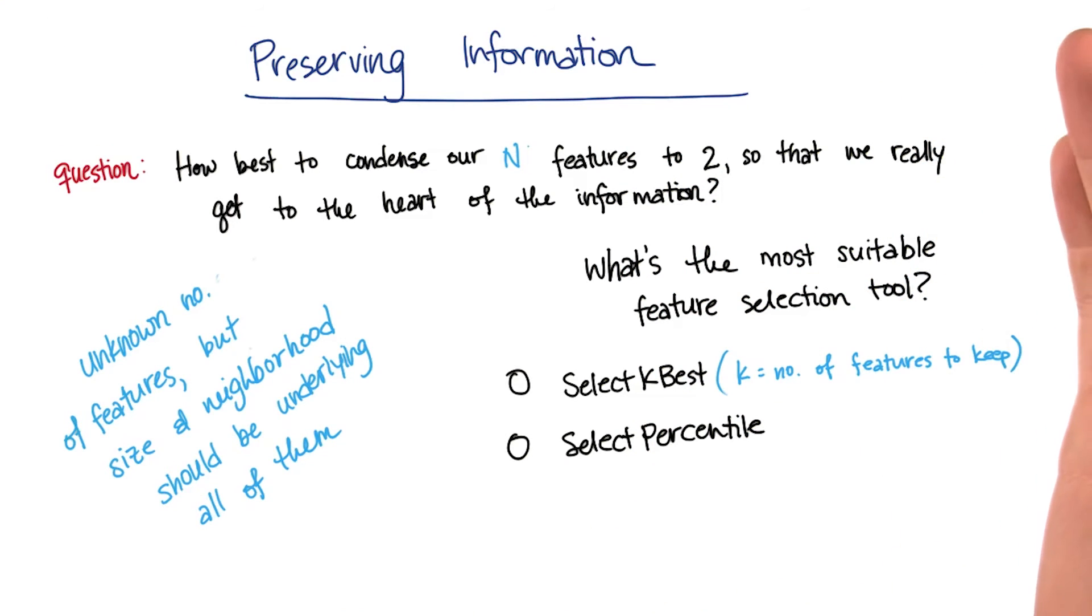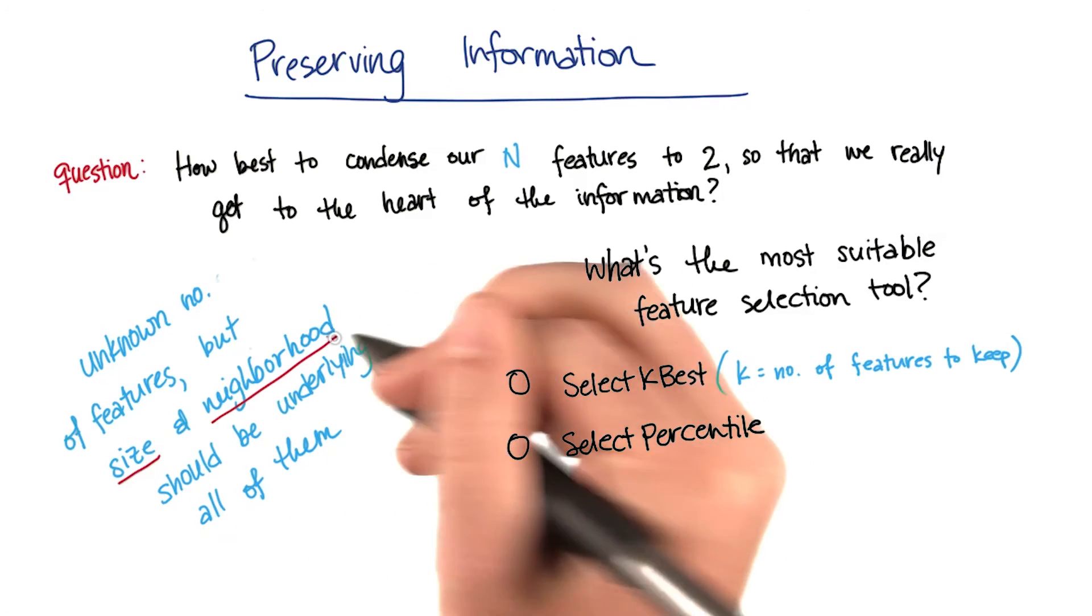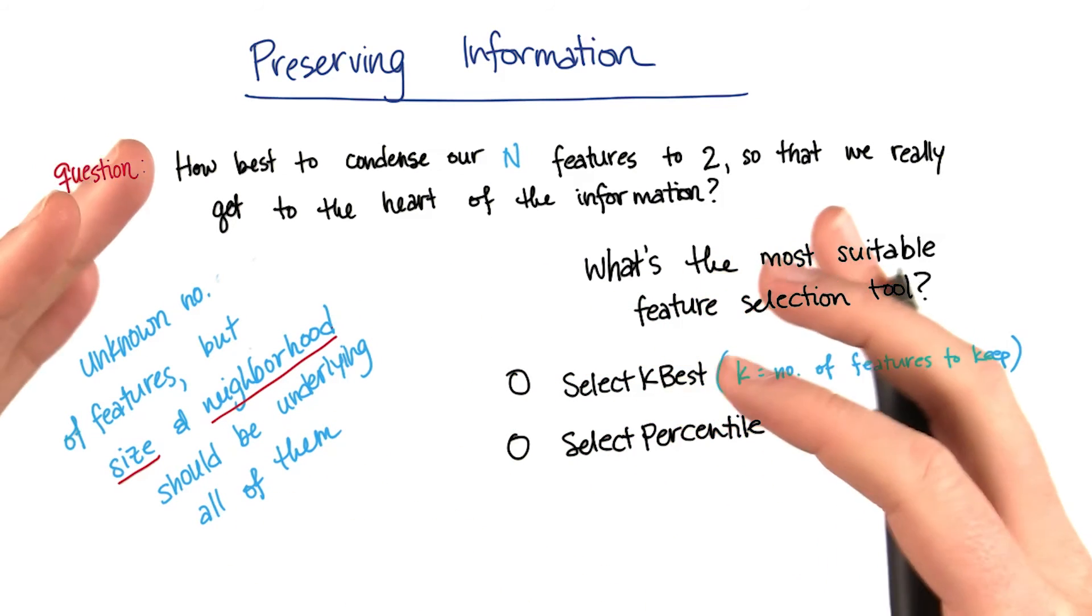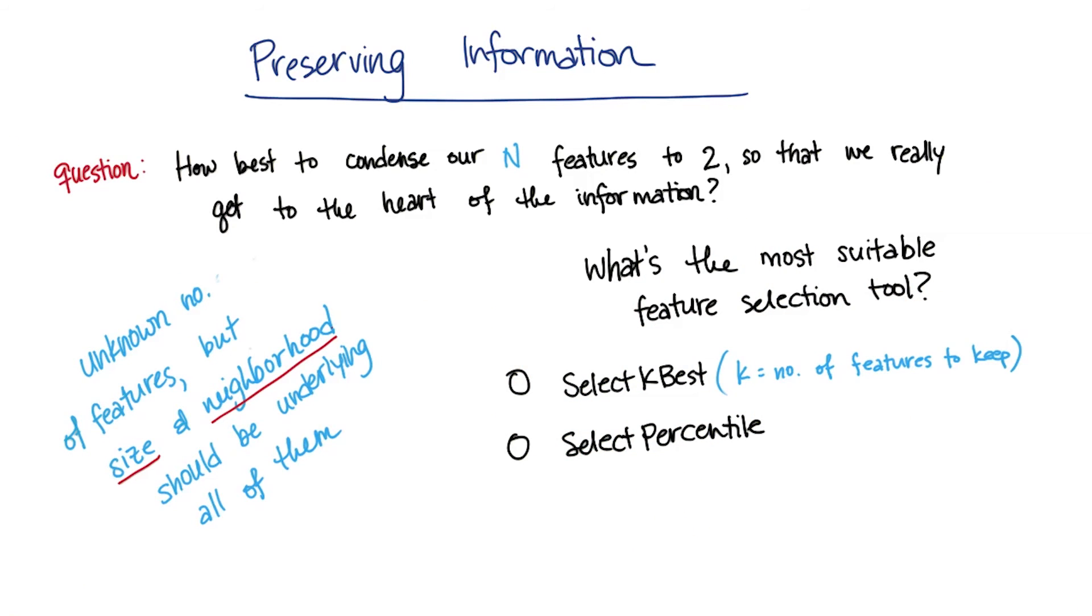Let's suppose that the number of features you have available to you isn't something that you know very well. Say it's one of the first times you're looking at this data set. But you do know that the size and the neighborhood are going to be the underlying latent variables that are sort of driving the trends in all of the features that you have available to you.